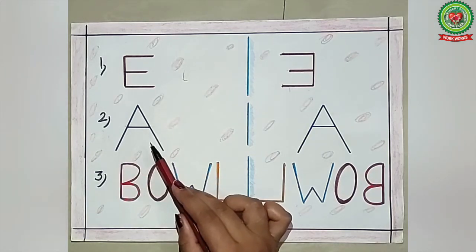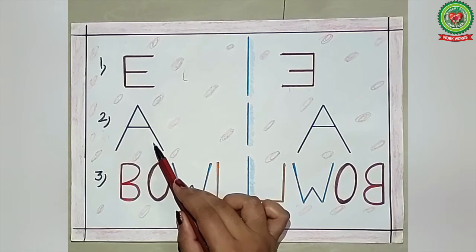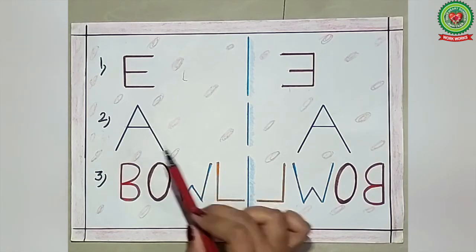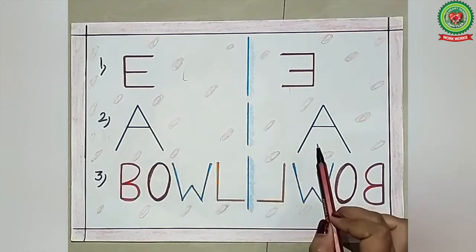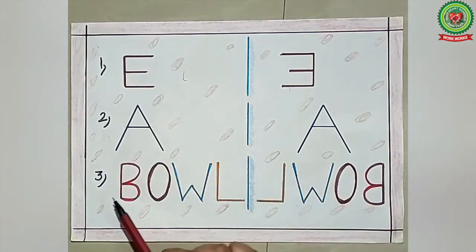Second is A. A is symmetrical, so the image of symmetrical objects is symmetrical. The image of A is A.